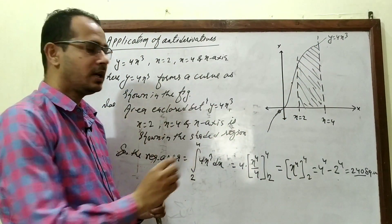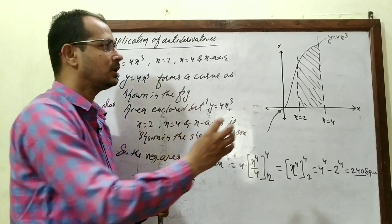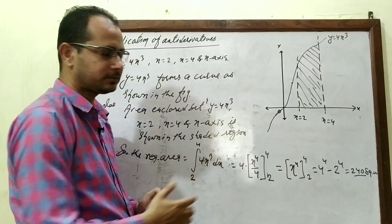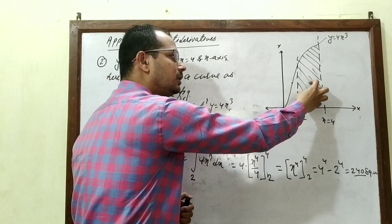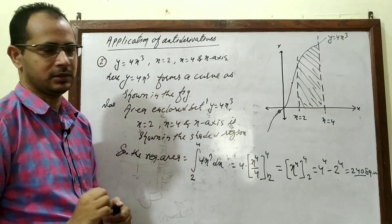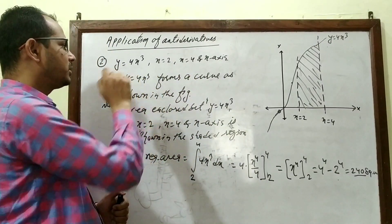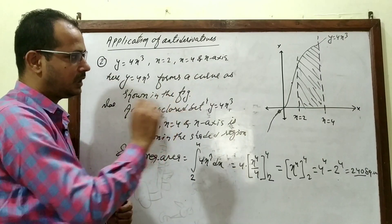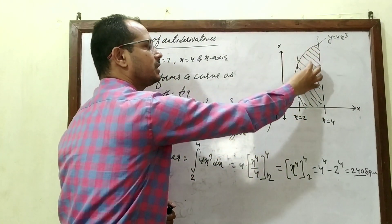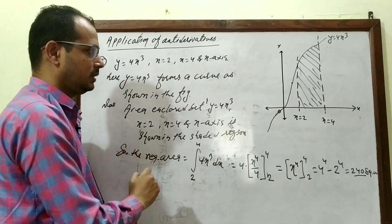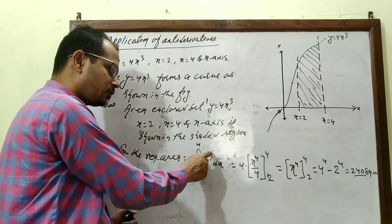Now, with the curve drawn, x = 2, x = 4, and the x-axis enclose a region. y = 4x³ forms a curve as shown in the figure. The area enclosed between the given curve, x = 2, x = 4, and the x-axis is shown in the shaded region. The required area is the integral of y dx = integral of 4x³ dx.